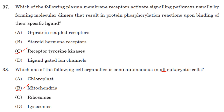Which plasma membrane receptors activate signaling pathways by forming molecular dimers that result in protein phosphorylation upon binding of their specific ligand? In the case of receptor tyrosine kinases, binding of a ligand alters the conformation of the receptor, allowing it to activate G protein by GDP-GTP exchange, followed by release of the GTP-alpha subunit. The answer is option C, receptor tyrosine kinases.